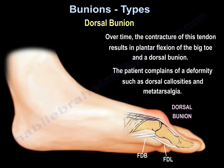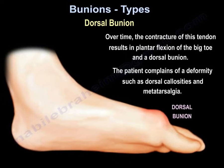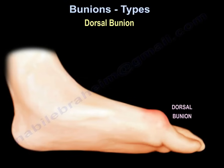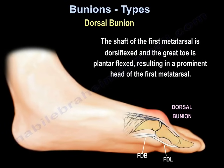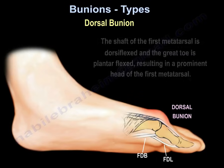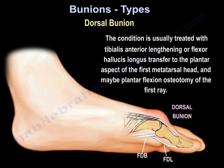The imbalance between a strong tibialis anterior tendon and a weak gastrocnemius-soleus complex, compensated by strong secondary plantar flexors such as the flexor hallucis longus and brevis, will lead to the development of dorsal bunion. Over time, the contracture of these tendons results in plantar flexion of the big toe and dorsal bunion. The patient complains of dorsal callosities and metatarsalgia. The shaft of the first metatarsal is dorsiflexed and the great toe is plantar flexed, resulting in a prominent head of the first metatarsal.